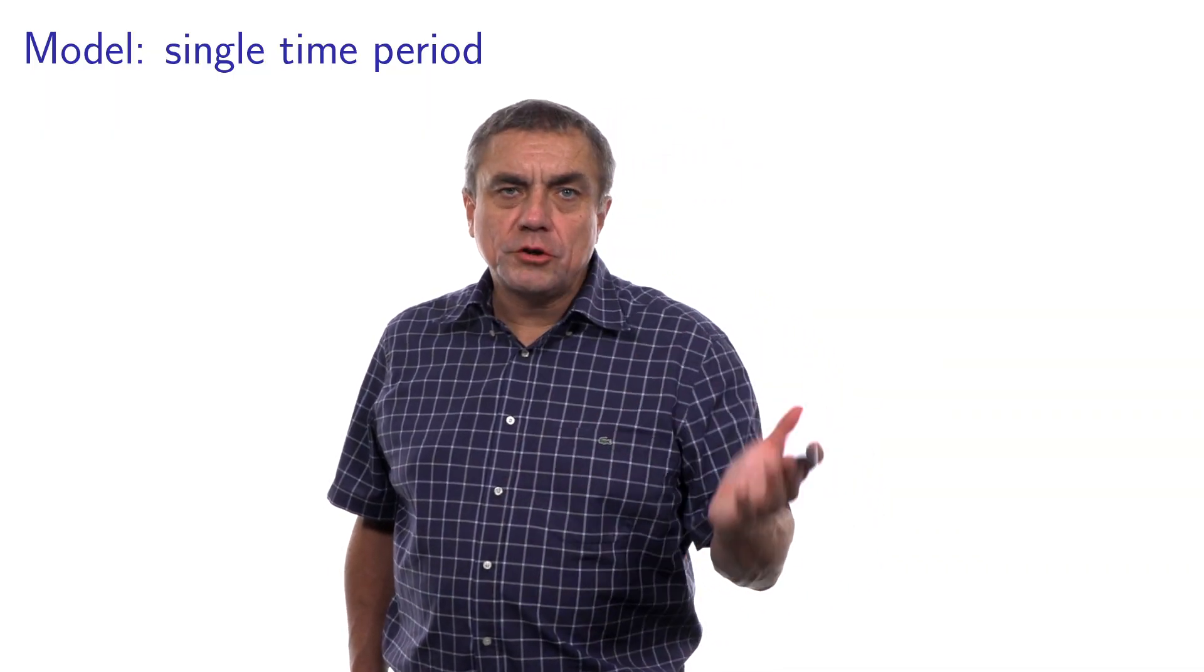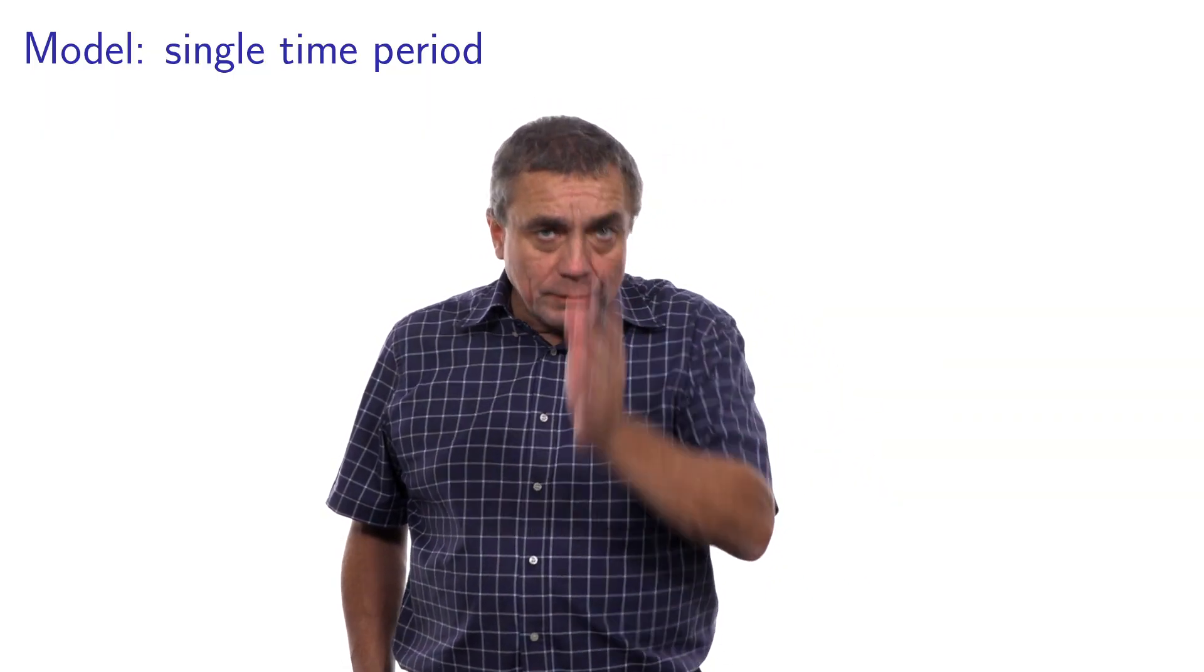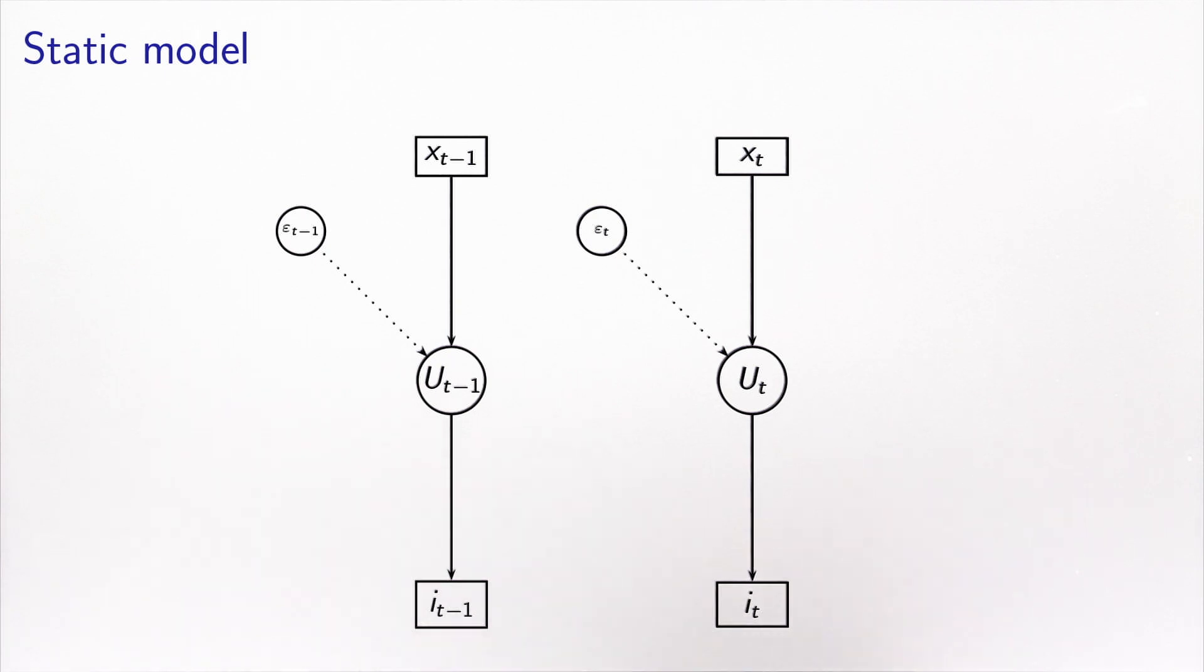This is the pictorial representation of a choice model at a given single time period. Now I have access to data covering multiple time periods. Something that I can do, which is very easy, is to duplicate this model for each time period that I have. I have simply duplicated the specification and associated each of them with a different index, t. This is the model for time interval t, and I have exactly the same specification for time interval t-1. This is called the static model.